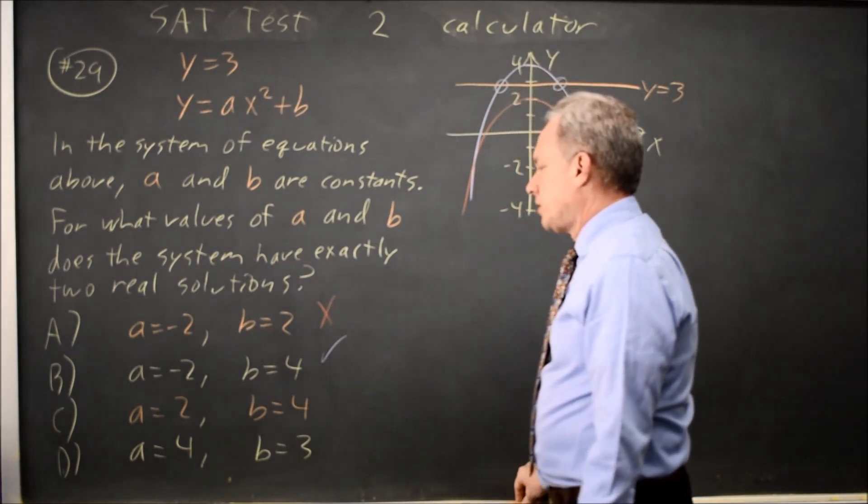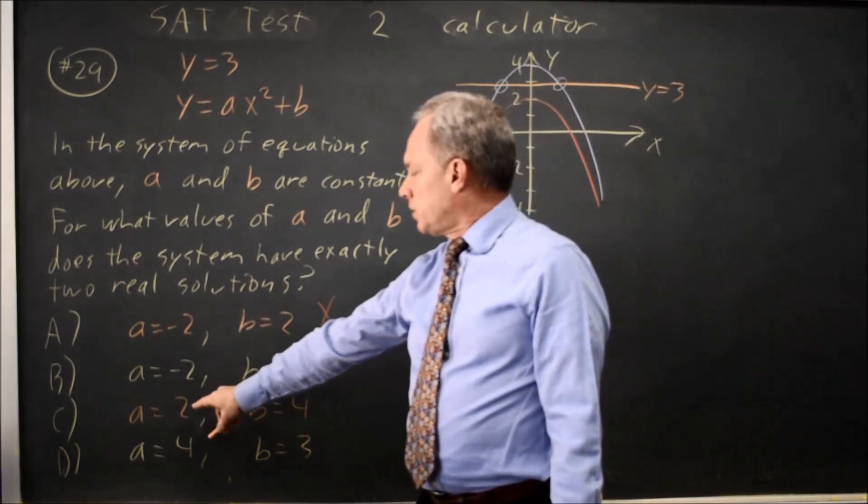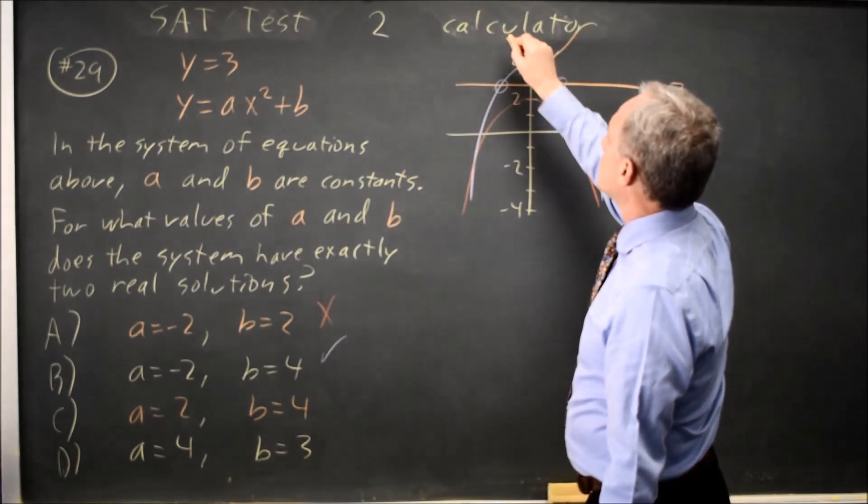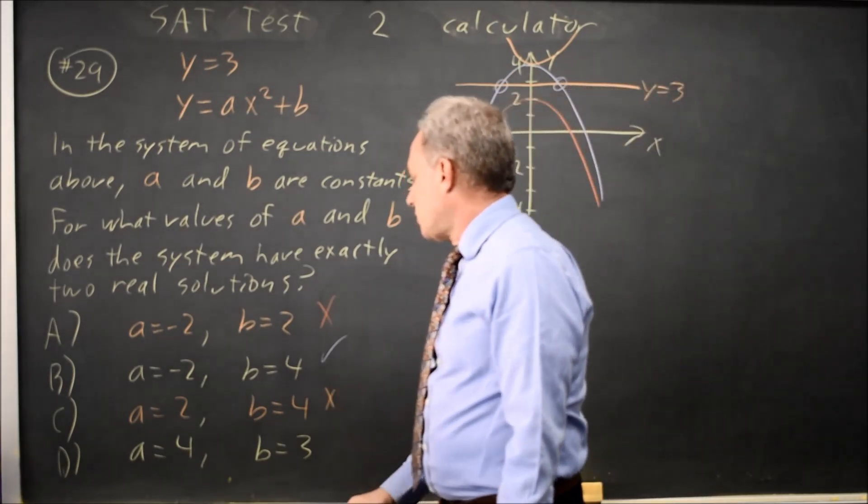Let's try another option. A equals 2, B equals 4. This parabola opens up and the vertex is at Y equals 4. Opening up from 4, we never hit Y equals 3 so that does not work.